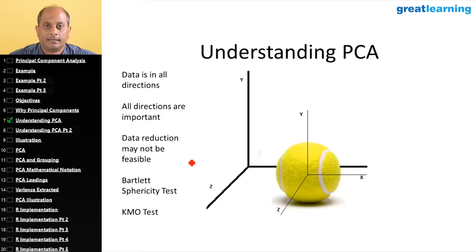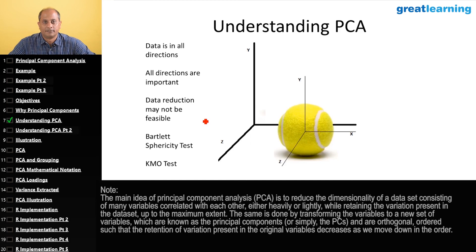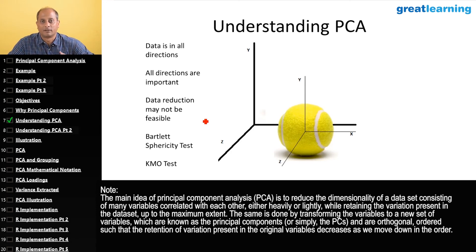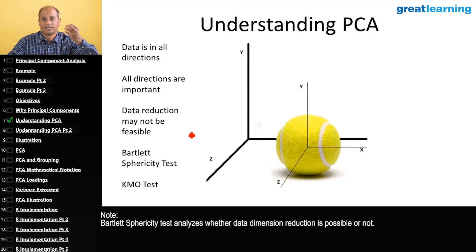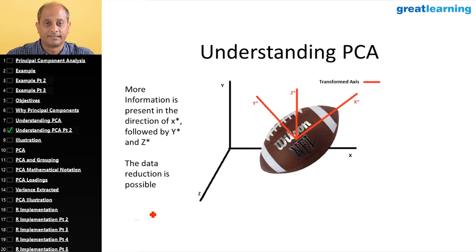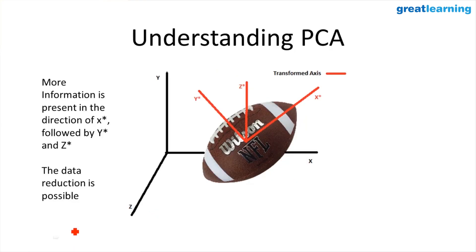Let us look at a diagrammatic illustration of principal component analysis. If data is present in every direction and all directions are important, it implies that each variable in the data is unique and the correlation between all variables is virtually zero. Each variable remains important and data reduction is not feasible. The spherical ball, being the same in every direction, represents this case where dimension reduction is not possible. This is the intuition behind using a Bartlett sphericity test to determine whether data dimensions can be reduced.